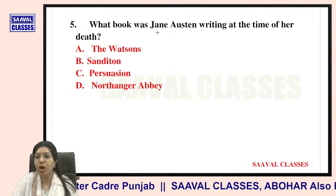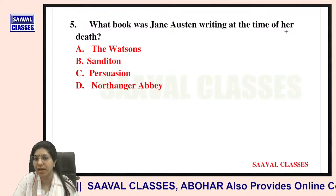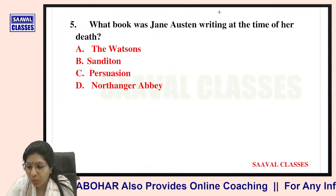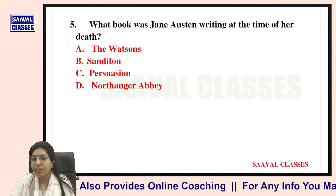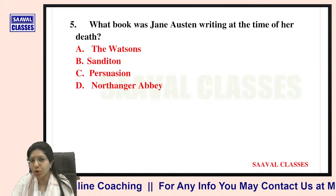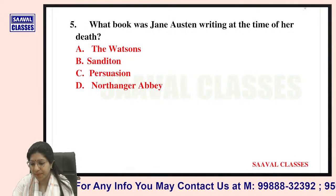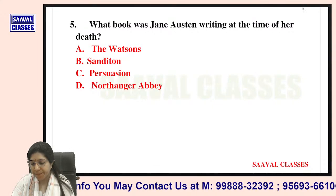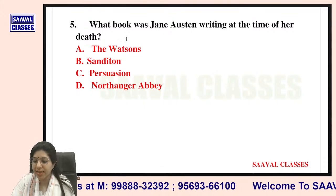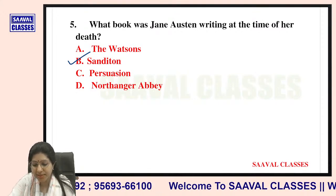Question number five: What book was Jane Austen writing at the time of her death? Options are The Watsons, Sanditon, Persuasion, and Northanger Abbey. It is Sanditon — absolutely right. And it was unfinished.